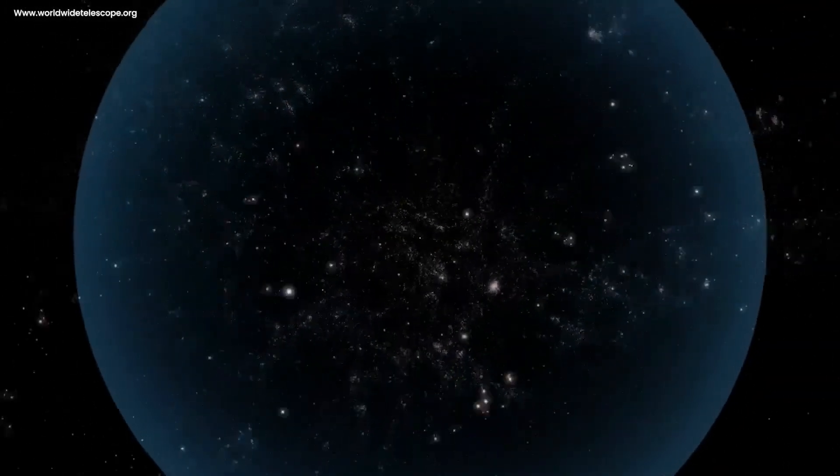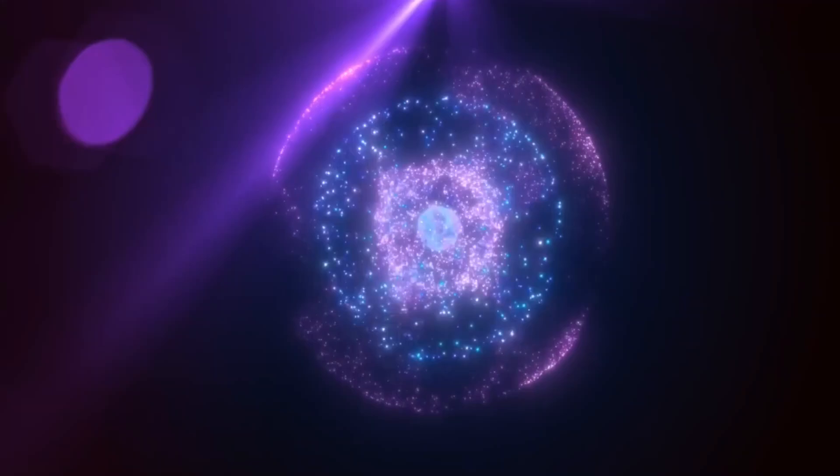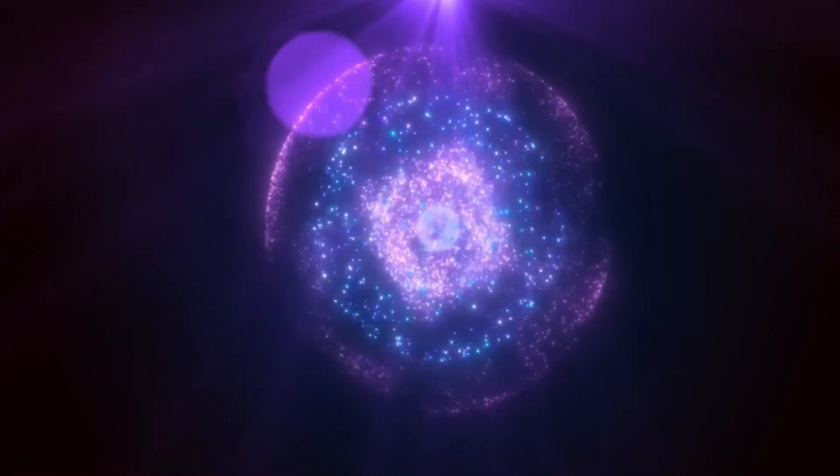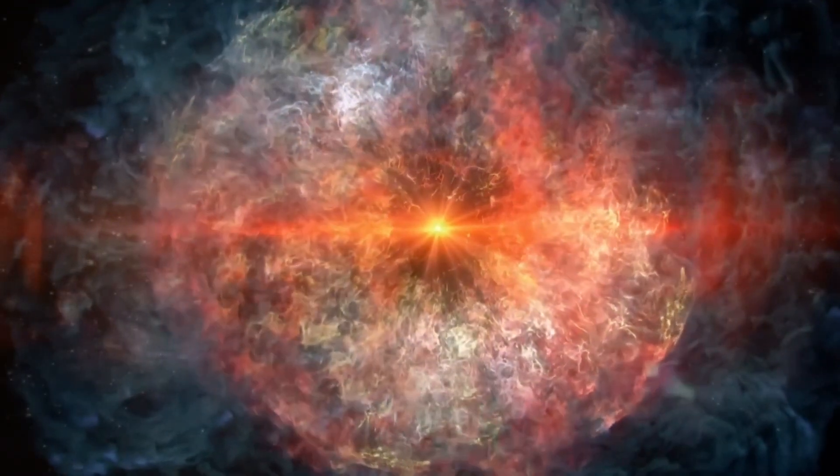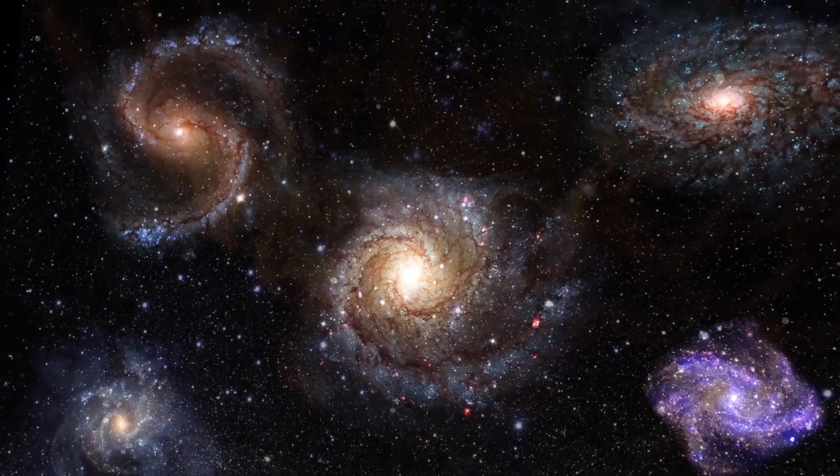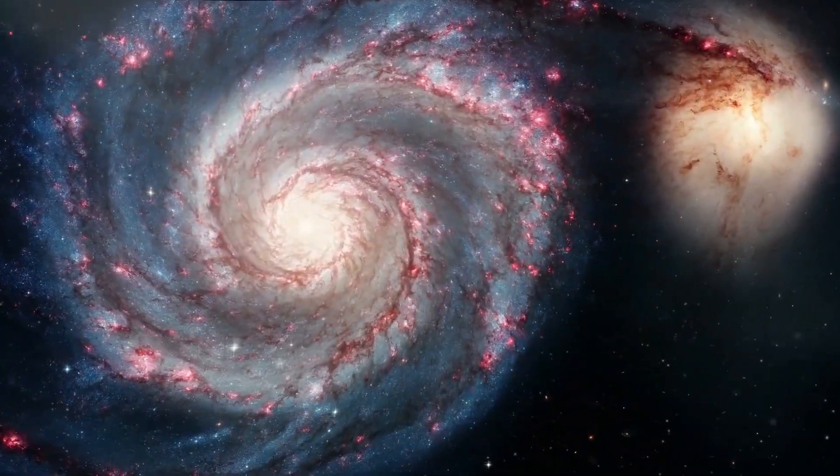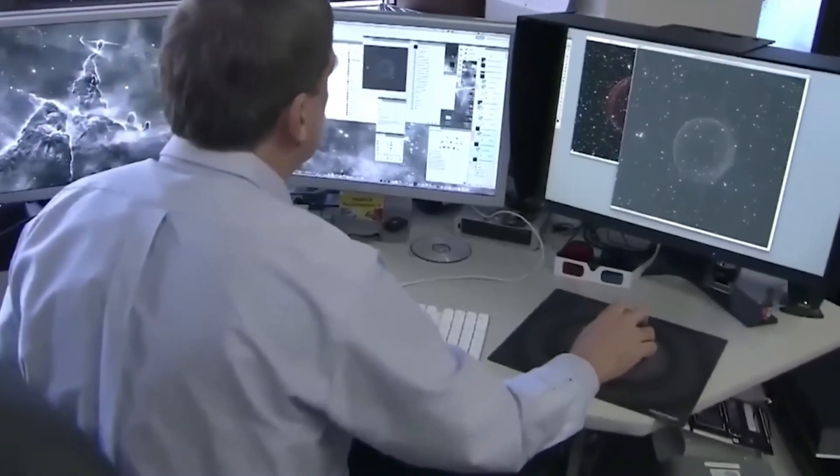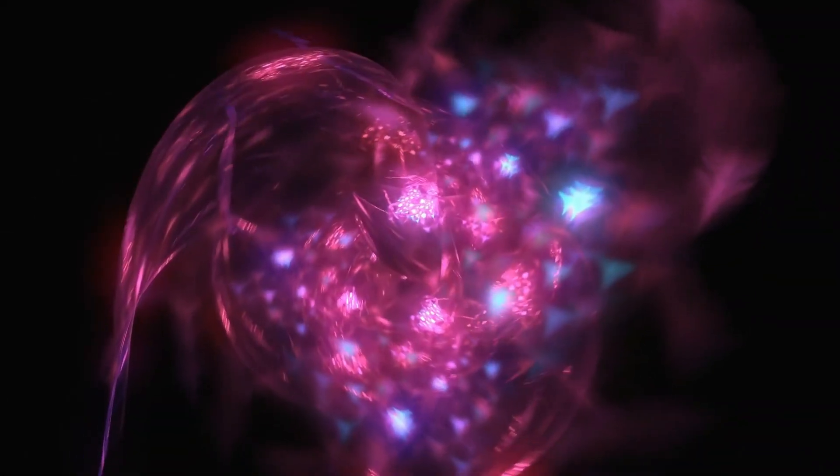Most of these particles would have remained within the cloud, but neutrinos would have escaped, as they scarcely interact with matter. The other particles would have imparted their energy to the hydrogen and helium, heating the cloud and nurturing star formation and growth. These stars would have taken shape at the hearts of mini-halos, which are early proto-galaxies emerging around 200 million years post-Big Bang, prior to the appearance of elements heavier than helium and hydrogen.